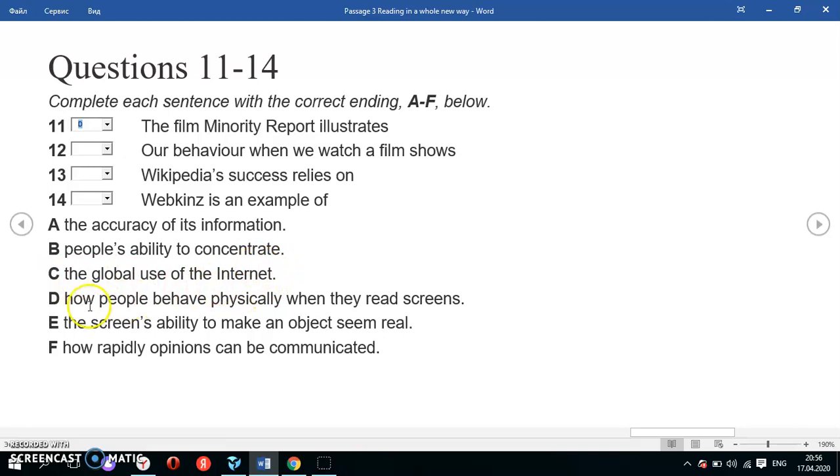So let's choose. A: accuracy of information—no. B: ability to concentrate—no. C: the global use of internet—no. D: the screen's ability to make an object seem real—interesting, but no, it's not given. F: how rapidly opinions can be communicated—yes, that's exactly the answer which I need, because when we watch a film, while we're watching it, we review the film for our friends. We express our opinions on the film—our feedback on the film—and we communicate it with our friends while we're watching it. Maybe we send them on the internet. So that's option F.